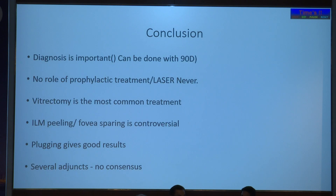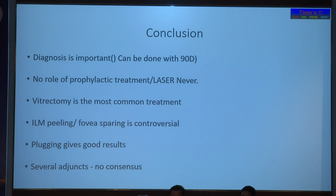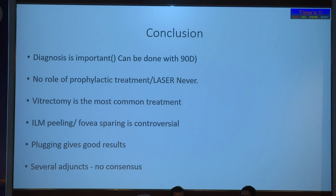In conclusion, diagnosis is very important and can be done simply with the 90-diopter lens. In any case of CSR or serious detachment over the macula, always look at the disc for any pit before proceeding. There is no role for prophylactic laser. If incidentally found, observe; but once the patient develops maculopathy, proceed to surgery. Vitrectomy is the most common approach. We do both ILM peeling and scleral plug. The plug gives very good results, and other adjuncts may be explored in future.